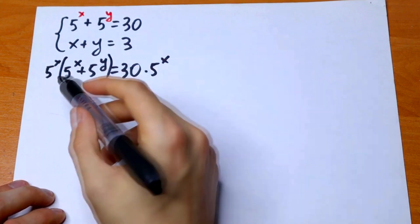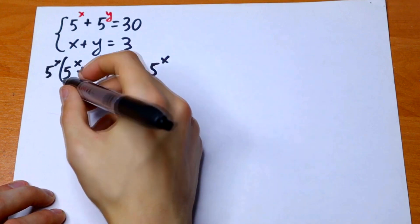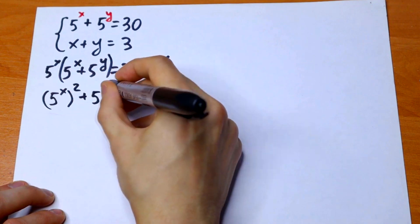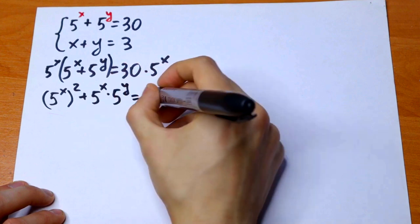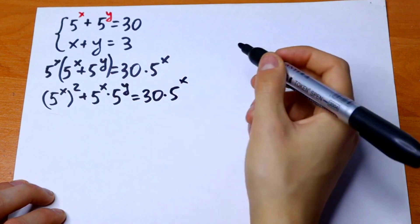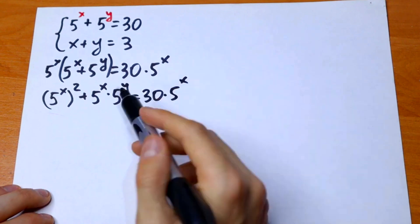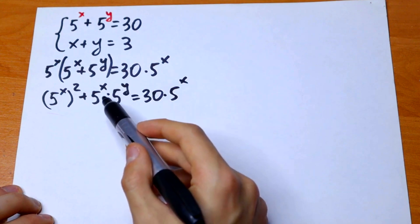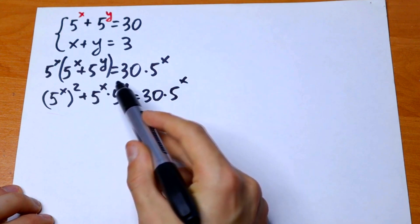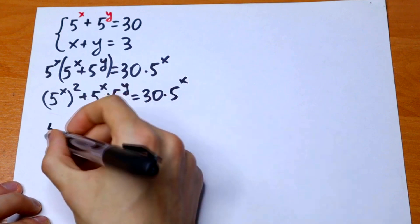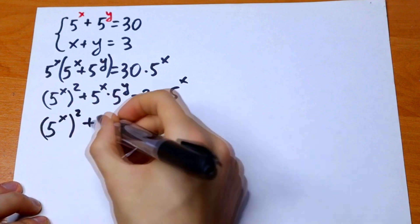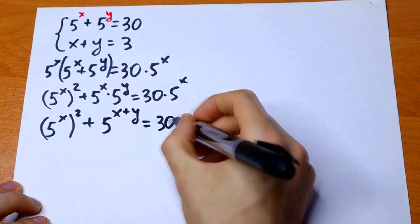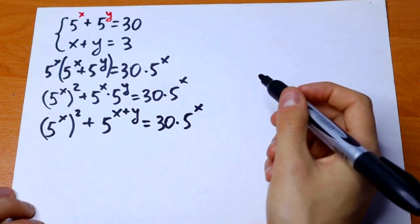We'll use parentheses and multiply through, giving us 5 to the power x squared plus 5 to the power x times 5 to the power y, equal to 30 times 5 to the power x. Since we have the same base with different exponents in a product, we can write it as 5 to the power x plus y.